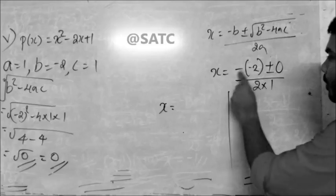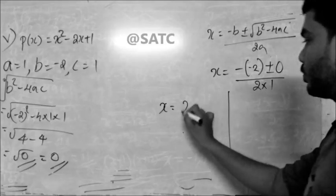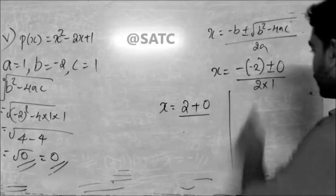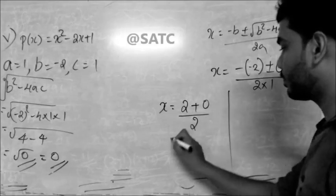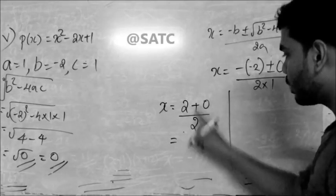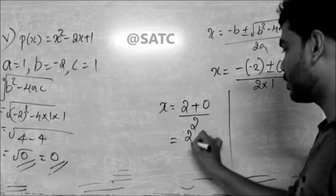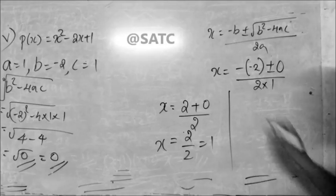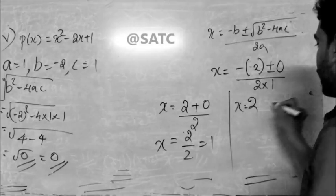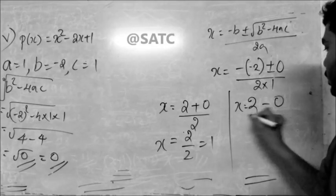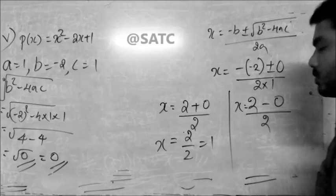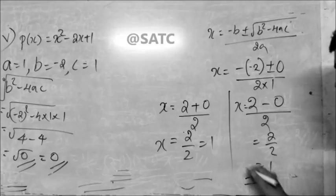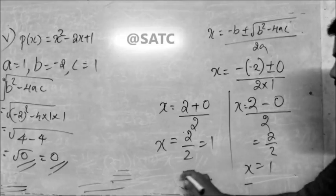X is equal to 2. Minus of minus, that is 2, plus 0 by 2 into 1, that is 2. Then 2 minus 0 divided by 2. This is R. V squared minus 4 is 0.